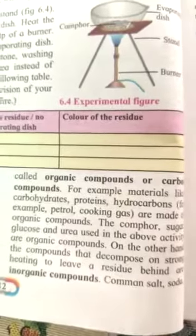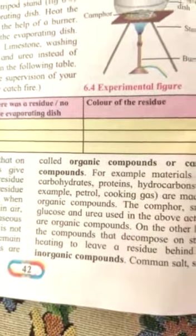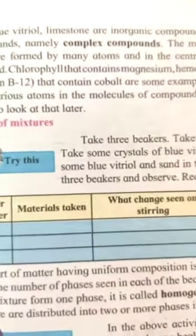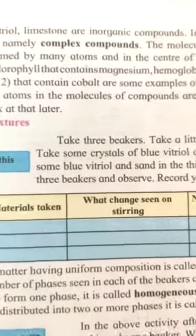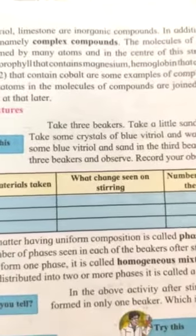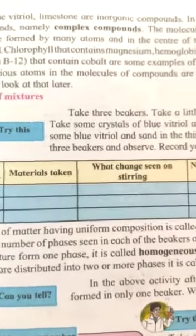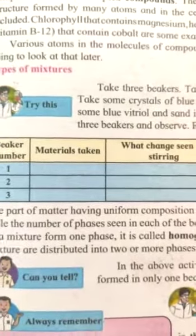Compounds which do not give a black carbon residue are called inorganic compounds. Examples are common salt, blue vitriol, and limestone. In addition, there is one more type called complex compounds. The molecules of complex compounds have a very complicated structure, formed by many atoms in the center. For example, chlorophyll contains magnesium, hemoglobin contains iron, and cyanocobalamin — Vitamin B12 — etc. These are called complex compounds.